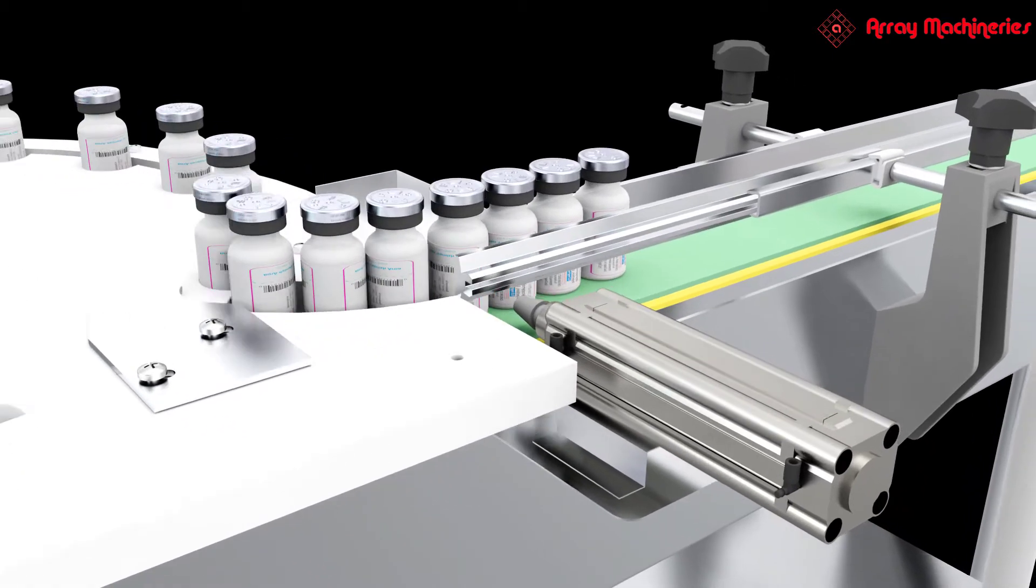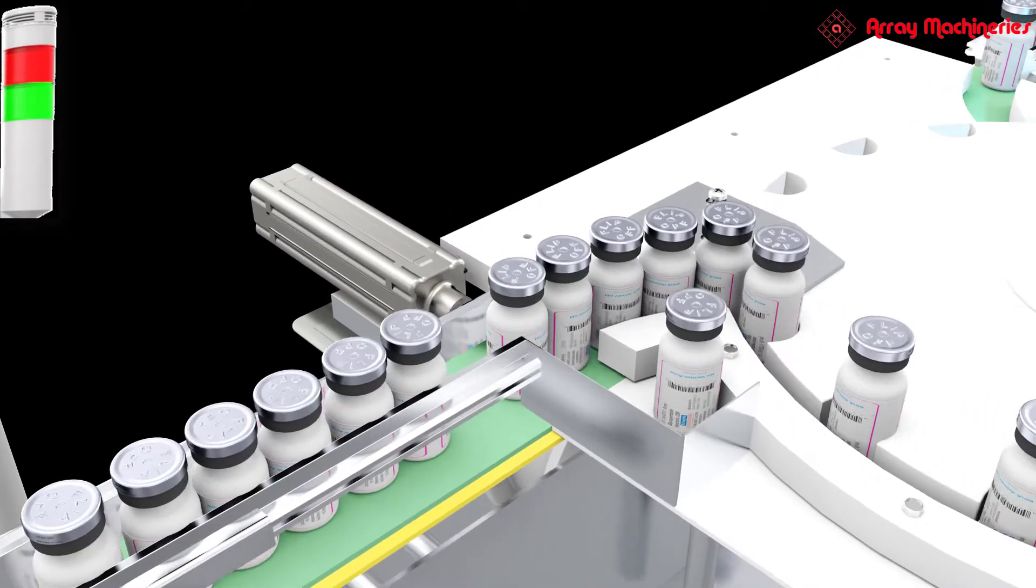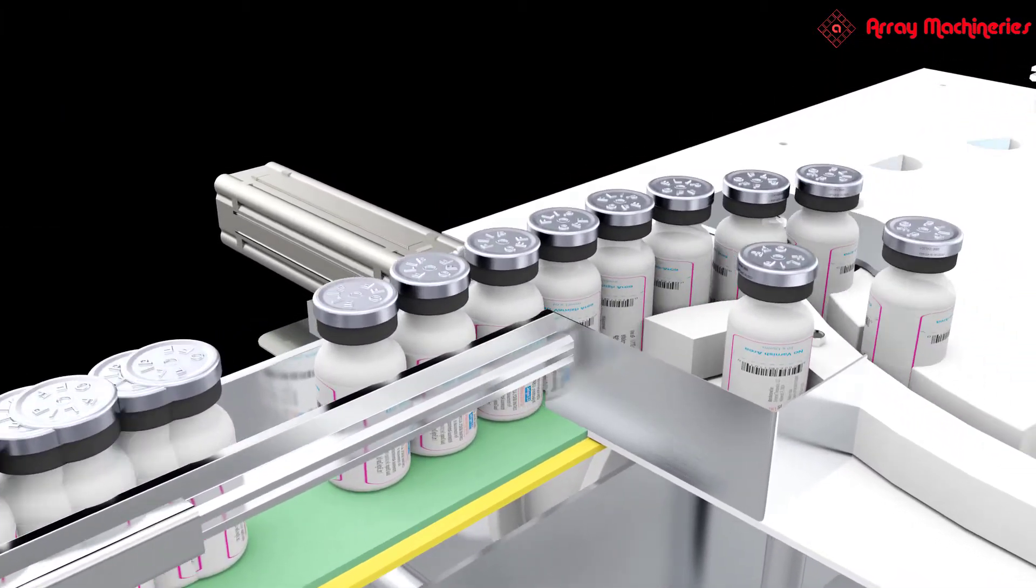If due to any reason prints got missed, it sends a signal to the rejector. A pusher type rejector rejects the unprinted vial. The rest of the vials are conveyed to the vial collating station.